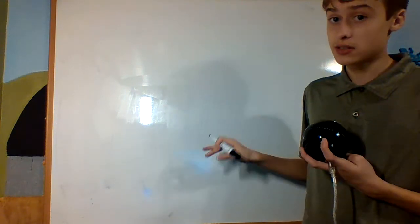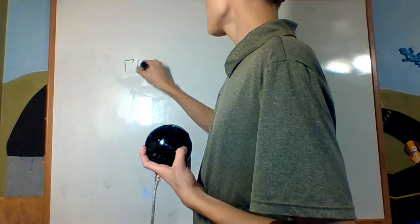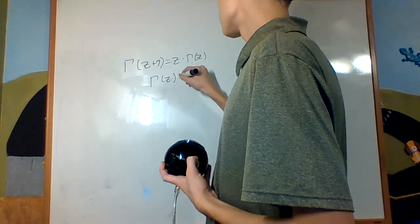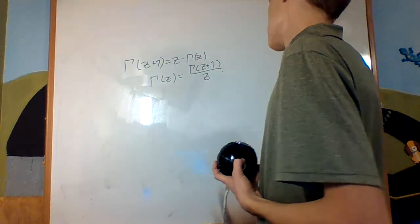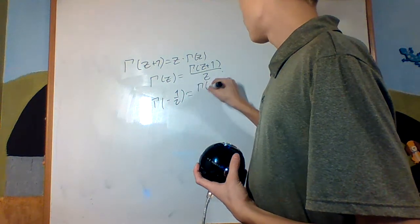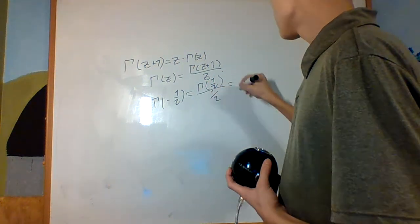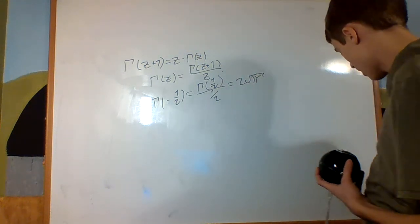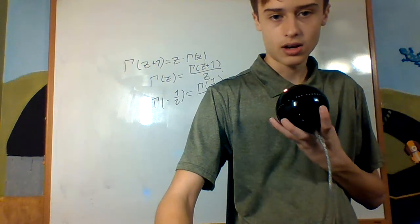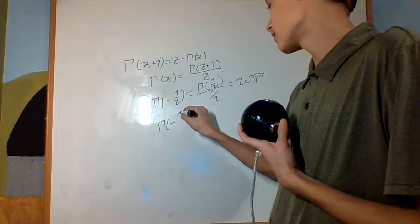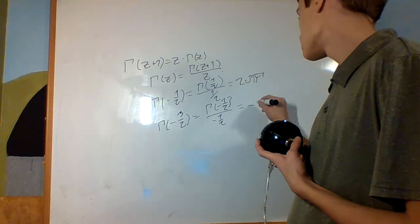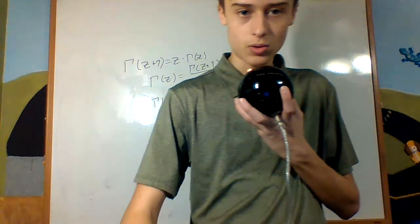We can also extend gamma below 0 by using the relation gamma of z plus 1 equals z times gamma of z, rearranged as gamma of z equals gamma of z plus 1 over z. For example, gamma of negative one half is gamma of one half over negative one half, which gives negative 2 times the square root of pi. And gamma of negative three halves is gamma of negative one half over negative one half, which gives negative 4 times the square root of pi, and you can carry that back further. Thank you.